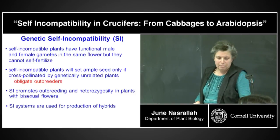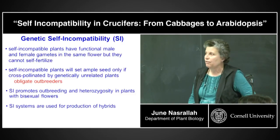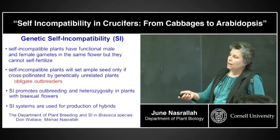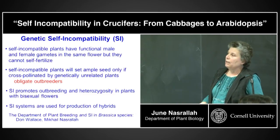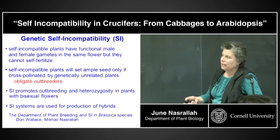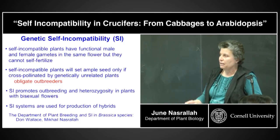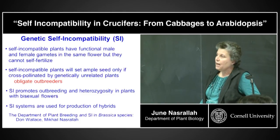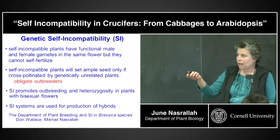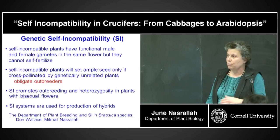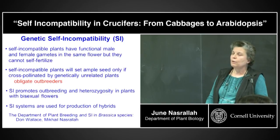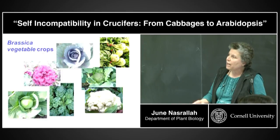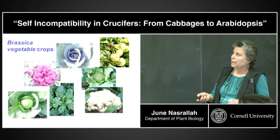Self-incompatibility systems have been used for production of hybrids. The work I'll be talking about is based on work carried out in the Department of Plant Breeding on Brassica self-incompatibility by Don Wallace and his student Mike Nasralla. The inbred lines developed in those studies are the ones we've used in our lab to clone the S-locus genes, or the self-incompatibility genes. This work was done initially in Brassica.